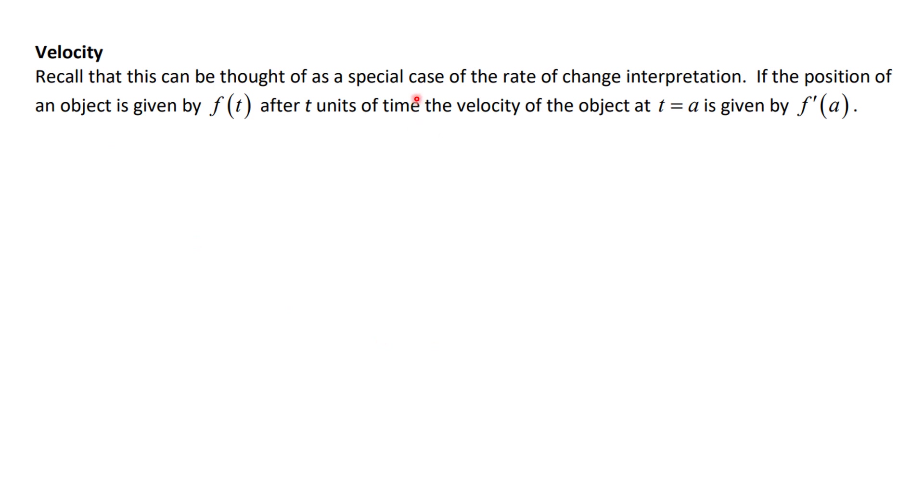Recall also that a special case of the rate of change is velocity. So if the position of an object is given by f of t where t is time, the velocity of the object at t equal a is given by f prime at a. So the velocity is the first derivative with respect to time of the position.